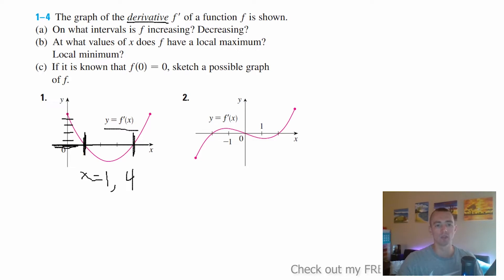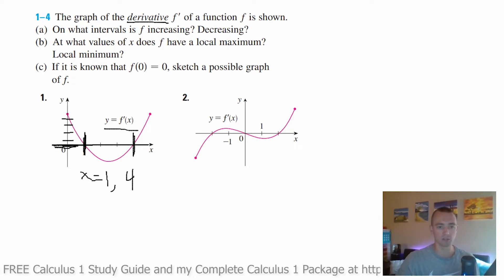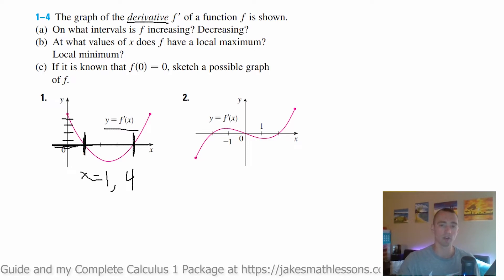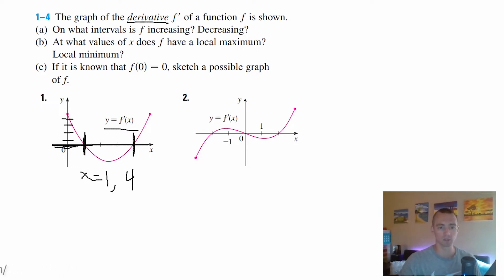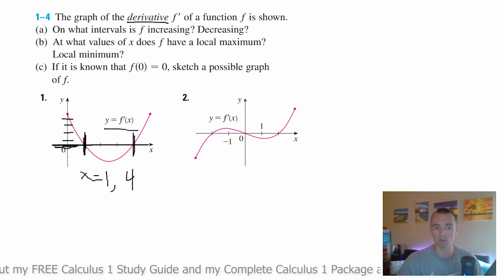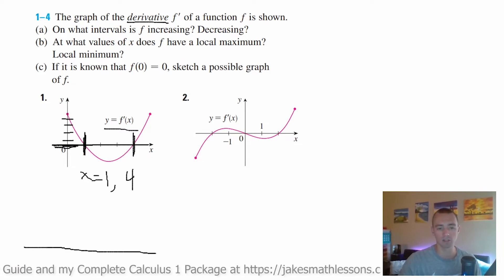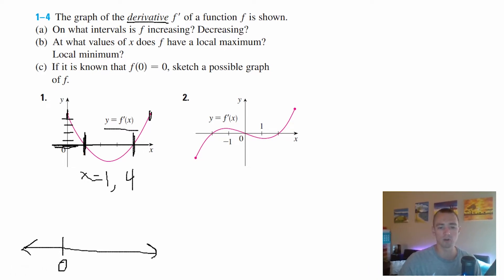So x equals one and x equals four are the two critical values of f. We just have to look and see where f' equals zero. That's going to be the first step in figuring these out for all three parts — a, b, and c — because in part a we're trying to find the intervals where f is increasing and where f is decreasing, in part b we figure out which values of x give f a local maximum and local minimum, and then we proceed to sketch a possible graph of f.